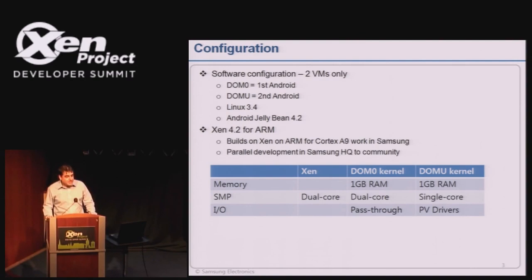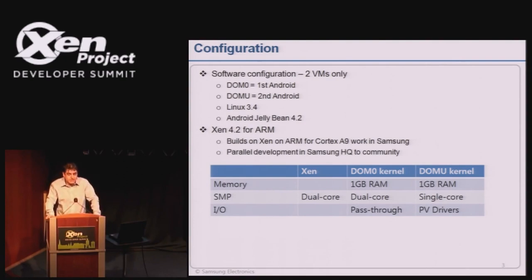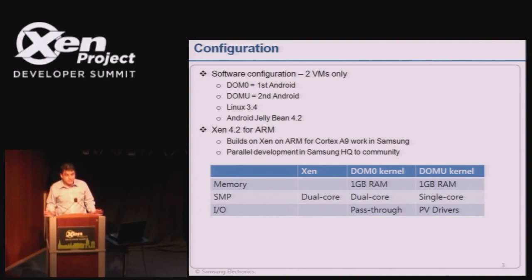It's a parallel development not just for us in the UK, but also at headquarters in Korea. We split the two gigabytes of RAM equally - one gigabyte for each Android - and that's fixed, no ballooning, no sharing. SMP is enabled; Xen runs dual core, DOM0 runs as dual core, but for this demo DOMU is only single core. DOM0 has pass-through, so we expect good performance from DOM0 for all I/O, graphics and display. But DOMU uses PV drivers - and that's where the challenge comes.